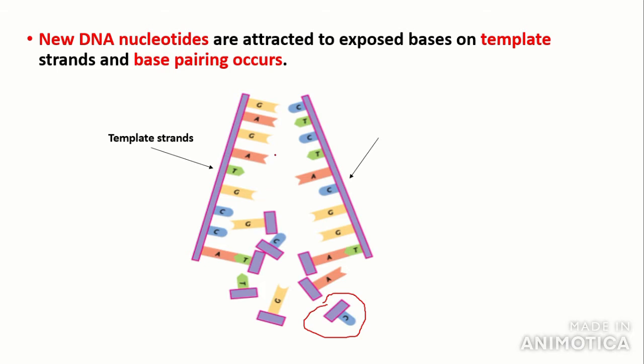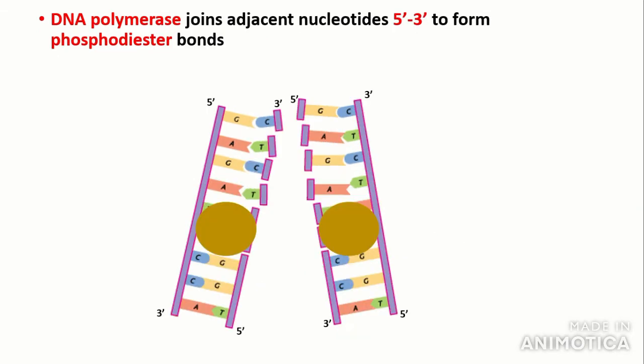However, the sugar-phosphate backbone is not yet formed at this stage. The sugar-phosphate backbone, or phosphodiester bonds, are formed by the enzyme DNA polymerase. It's really important to remember this and not confuse it with RNA polymerase, which is involved in transcription. DNA polymerase joins adjacent nucleotides in a five prime to three prime direction to form phosphodiester bonds.